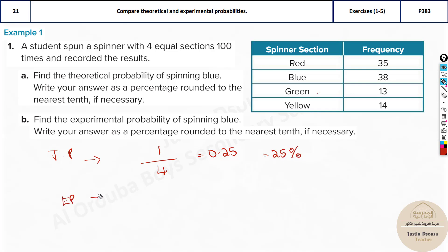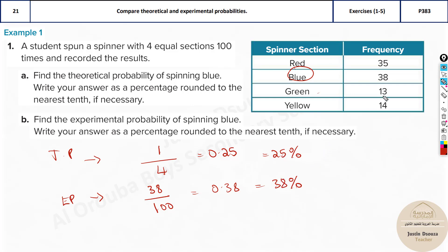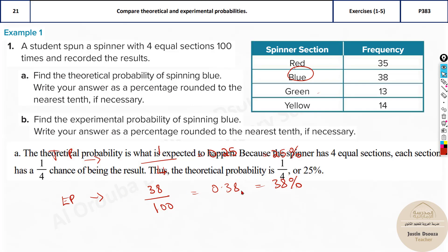Now what about the experimental probability? You can see all the colors and their frequencies are given. We focus only on blue. How many times did blue occur? It occurred 38 times, divided by the total of 100. That is 0.38, which equals 38 percent. Theoretically it's supposed to be 25 percent, but experimentally it became 38 percent. With many more trials it would converge to 25 percent — that is the law of large numbers. So answer A is 25 percent, and answer B is 38 percent.